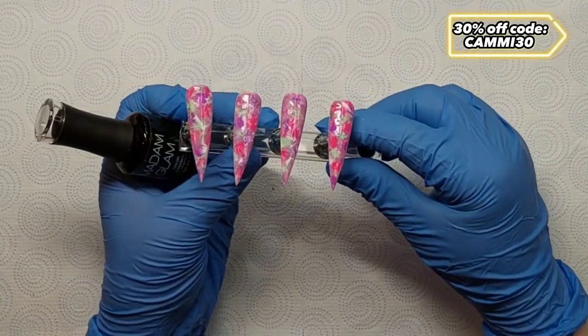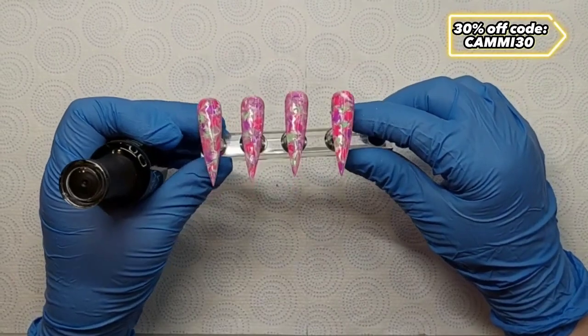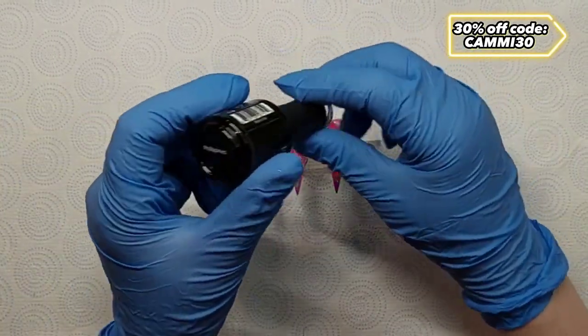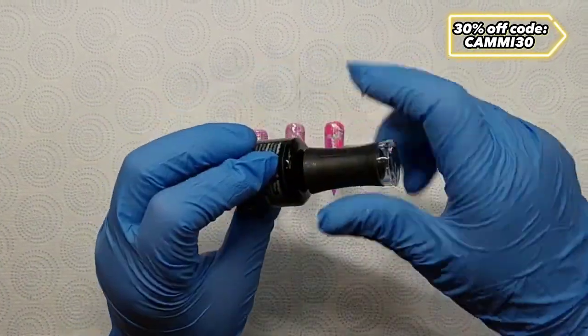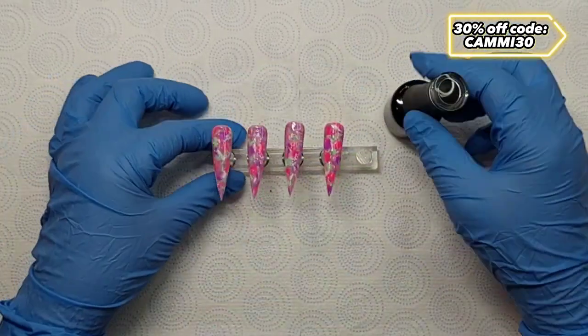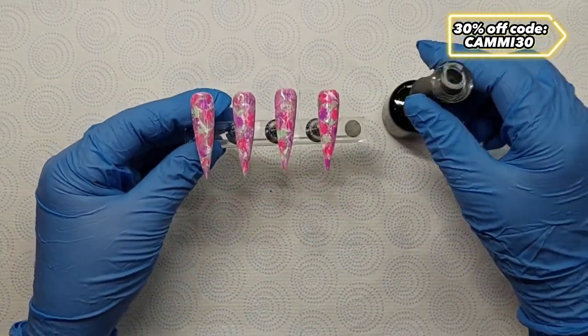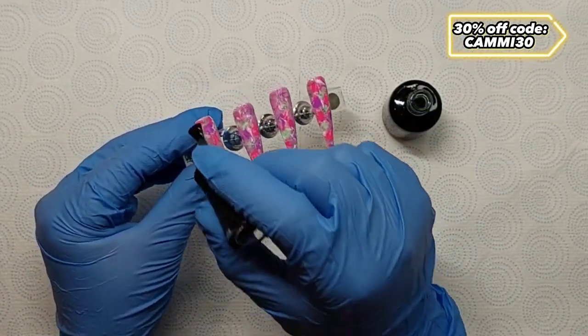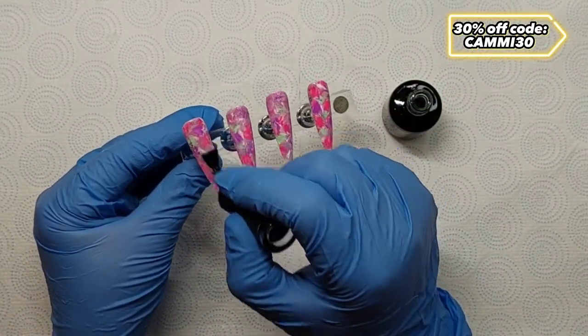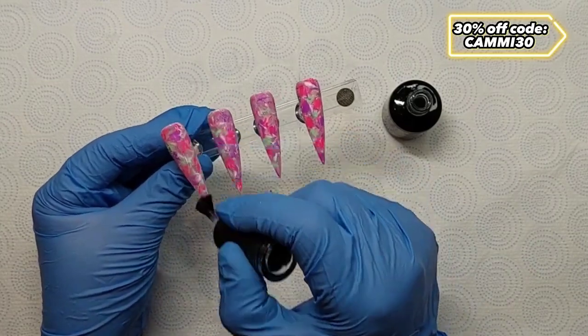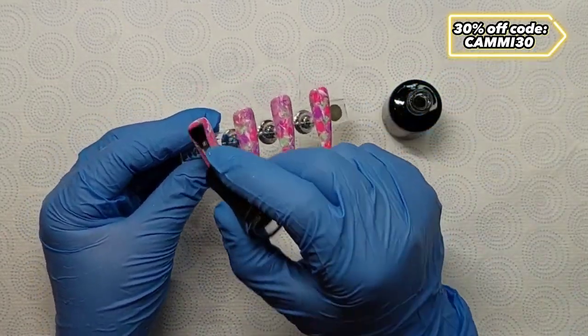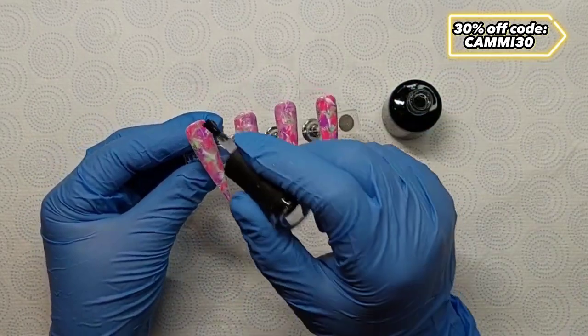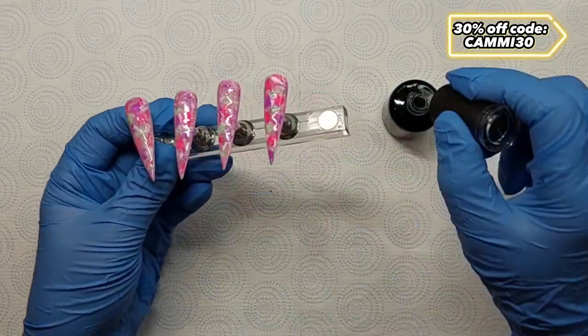So I've cured them for 60 seconds, they are cured good. I'm gonna go in with my favorite rubber base coat, Philippines, because these are pretty thick coats of gel. We're gonna go over this one to kind of smooth the nail out a bit, and if you have to, just go over with a buffer.